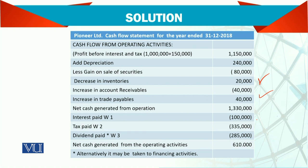Next we have net cash flow from operations, and then there are three things to pay: interest, tax, and dividends. You need to work out how much tax is in the liability, how much is charged to profit and loss, and what is the remaining liability — the balance is paid. Similarly for interest: opening liability plus charge to profit and loss account and closing balance, and what is left is paid. Dividend paid is worked out from retained earnings — what was the profit for the year and what is the remaining balance. If there is a difference we assume that it is dividend paid. The net cash flow generated from operating activity is 610,000.